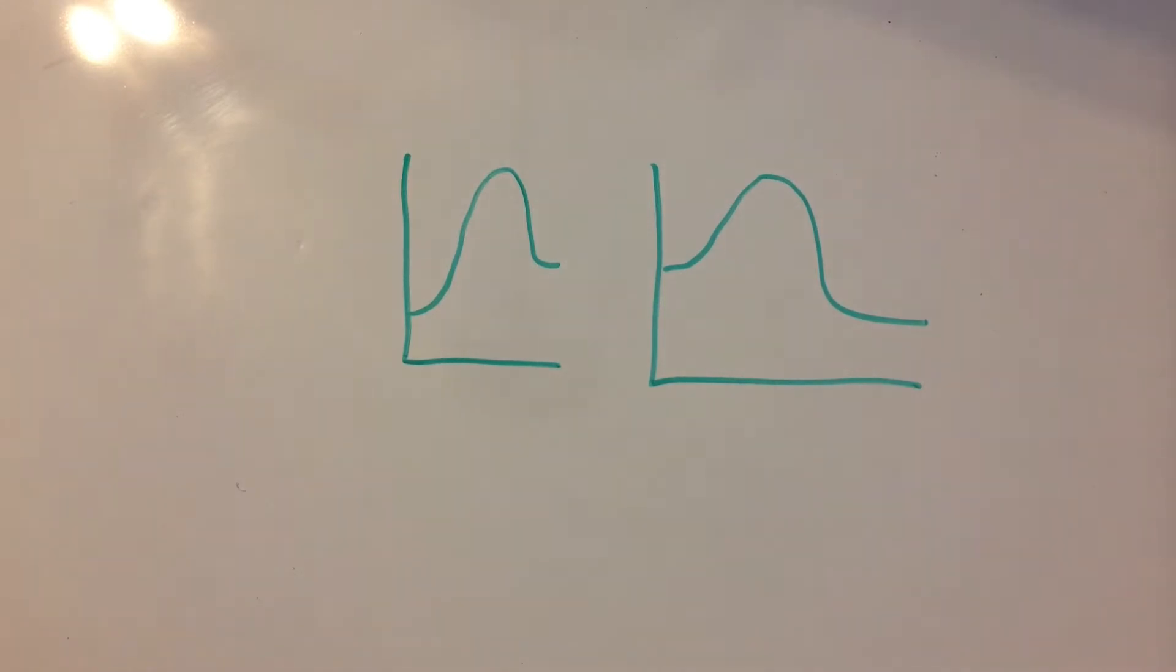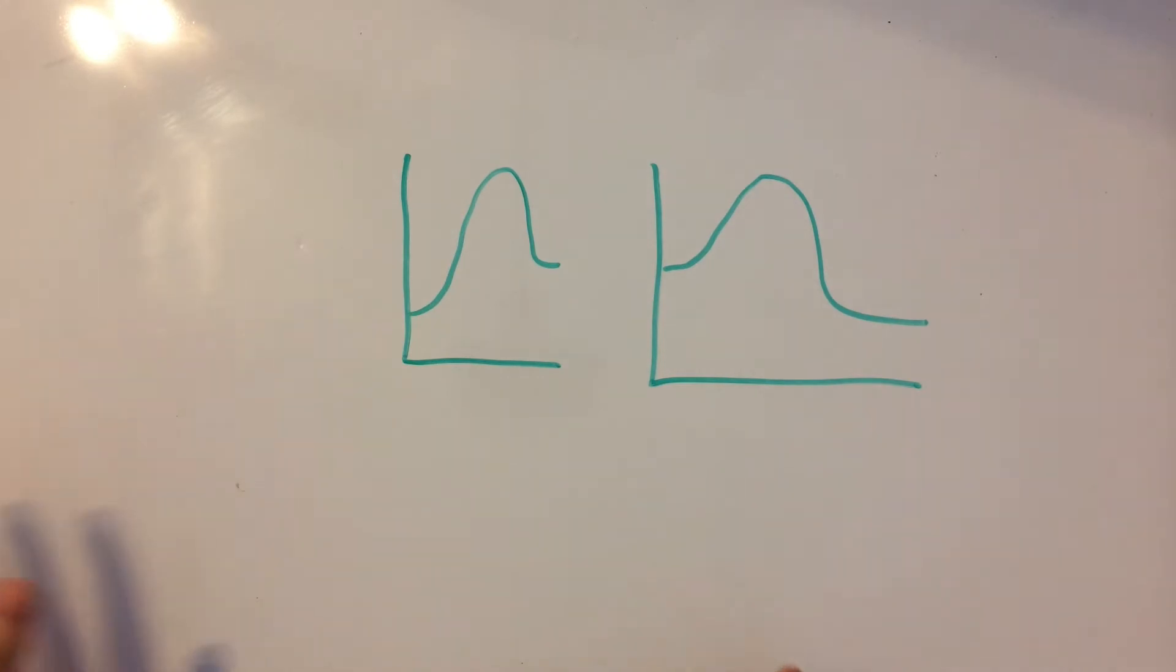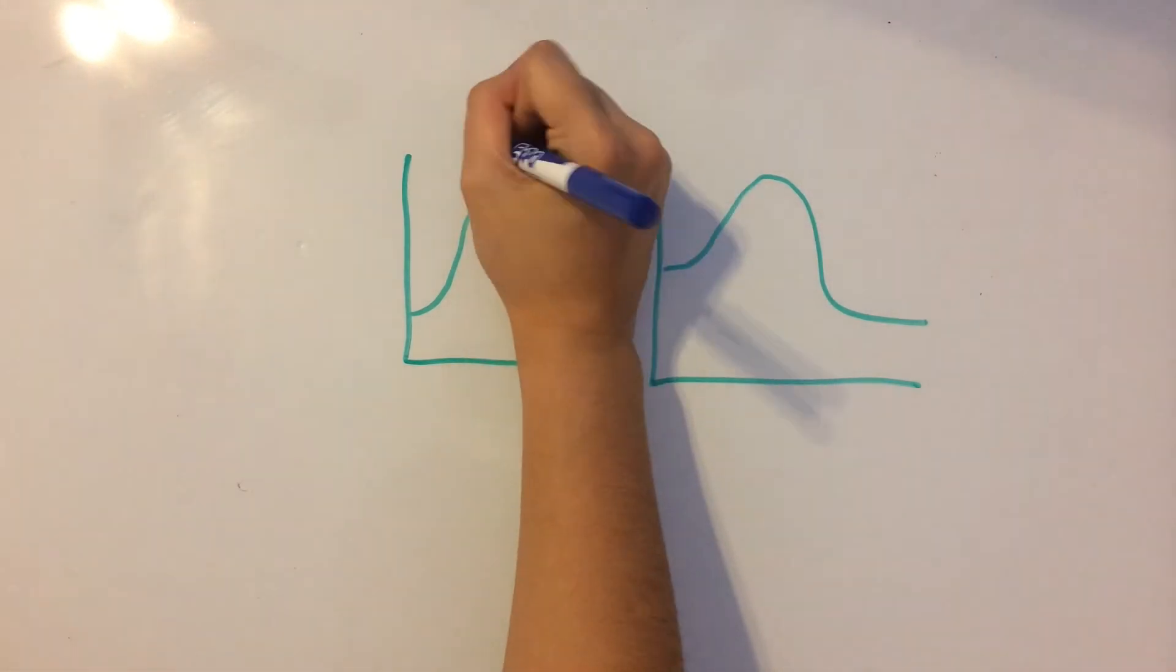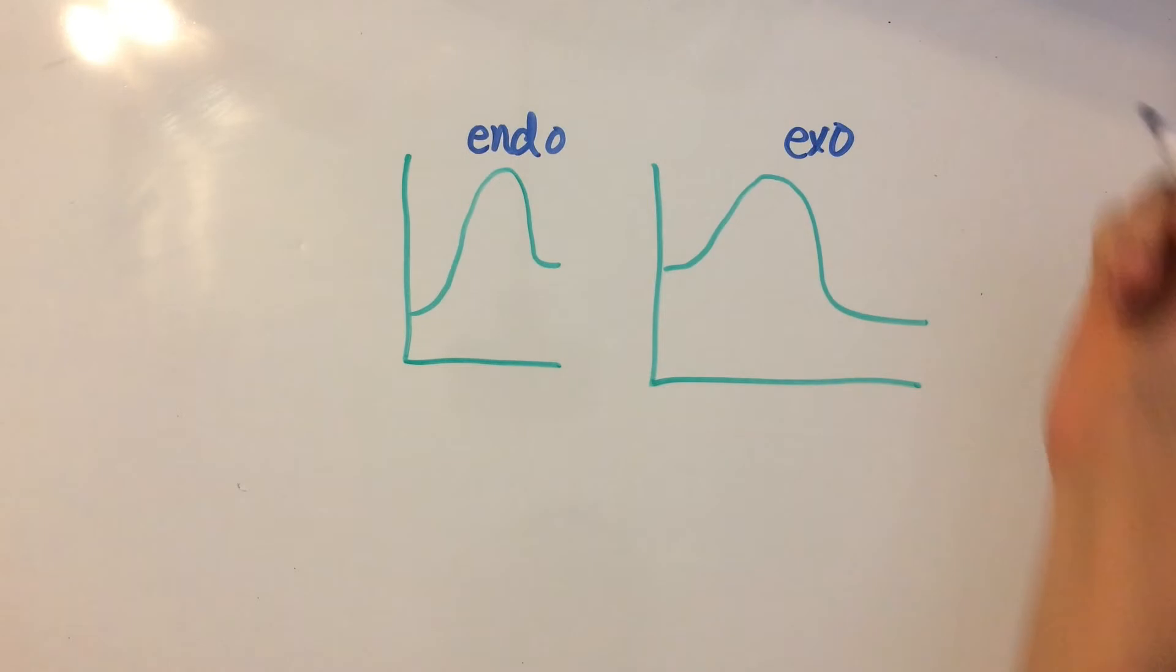So we have two potential energy diagrams here today, so that I can show you the effect of catalysts and activation energy. Now we have one of them which is endothermic, and the other one is going to be exothermic. And here's why.